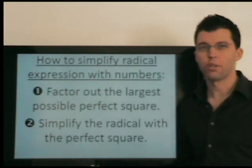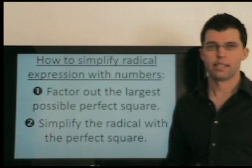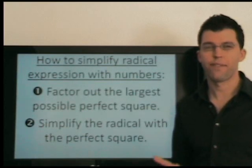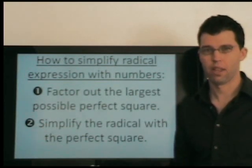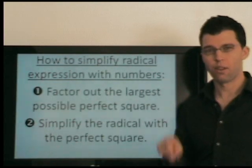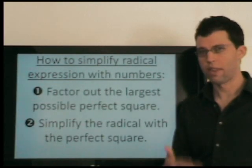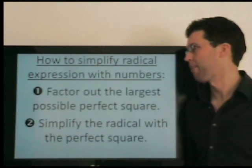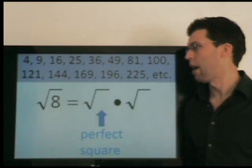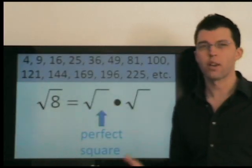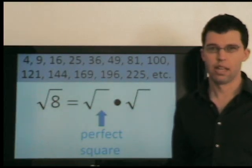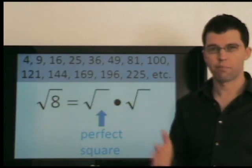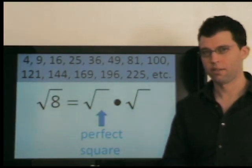How do you simplify radicals with numbers? Step one, we factor out the largest possible perfect square. Step two, we simplify the radical with that perfect square. I'm going to quickly go over a few examples just to give you the big picture, then I'm going to explain all the details.